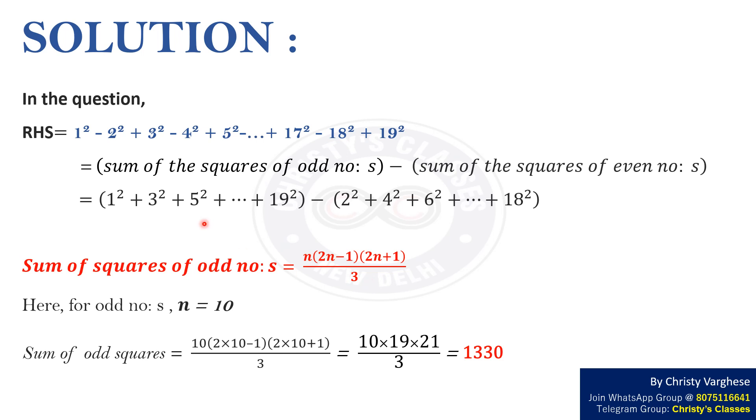Here in case of odd numbers n equals 10. Therefore sum of odd squares equals 10 into 20 minus 1 into 20 plus 1 by 3. That is 1330.